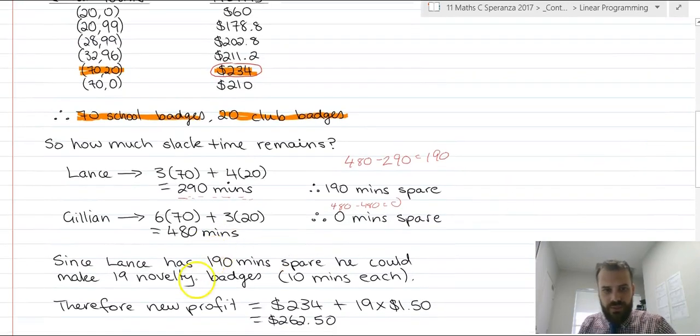He can make 19 novelty badges at $1.50 each. So therefore, the new profit is going to be the maximum profit that we got from our first two badges, our club and school badges, $234, plus the novelty badge profit. The total profit, once we include our slack time variable, is $262.50.